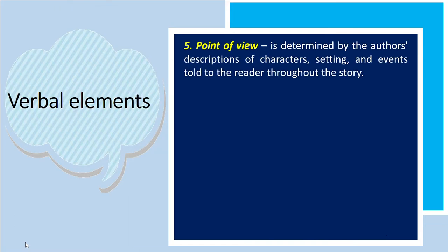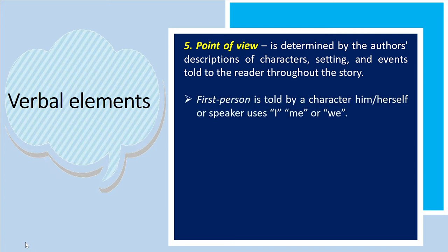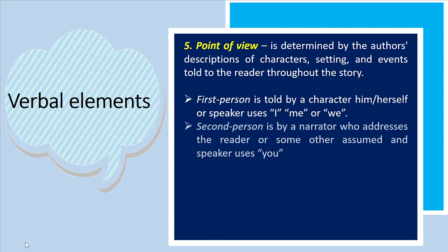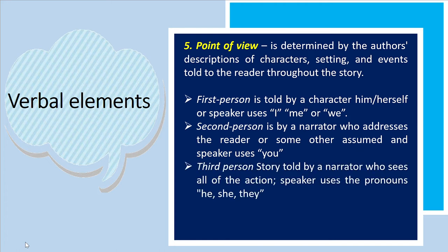The next verbal element is point of view, determined by the author's descriptions of characters, setting, and events told to the reader throughout the story. The three types are first person, second person, and third person. First person is told by a character themselves, using I, me, or we. Second person has a narrator who addresses the reader, using you, your, and yours. Third person is told by a narrator who sees all of the action, using pronouns he, she, or they.